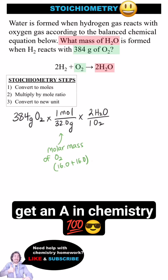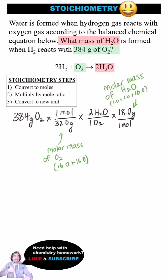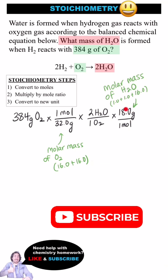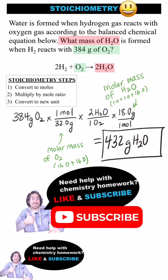When performing this step, make sure the chemical you are solving for is on the top of the ratio. Finally, convert the answer to the desired unit, which is grams in this case. So I'll multiply by the molar mass of H₂O, which is 18 grams per mole — 2 times the molar mass of hydrogen plus 1 oxygen from the periodic table. And the answer is 432 grams of water.